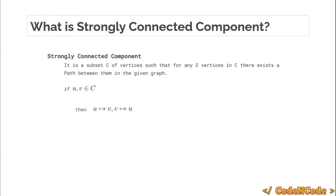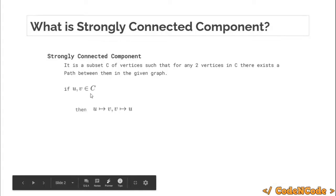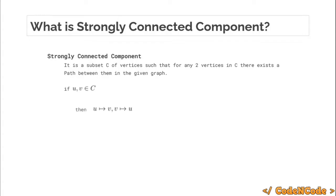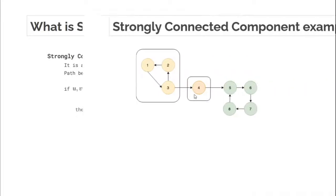We are going to study about strongly connected components. Strongly connected components are a subset C of vertices such that for any two vertices in the set C, there exists a path between them in the original given graph. C is a subset of the original vertex set of the graph such that for every two nodes in set C, there exists a path from v to u and from u to v.